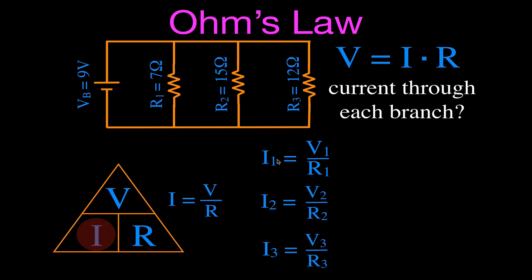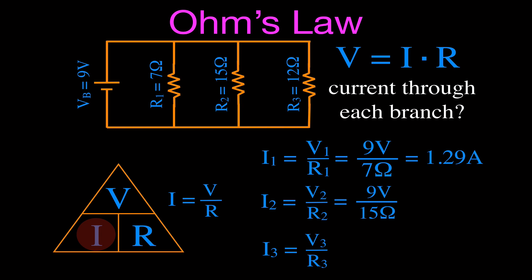To find the current through each branch, we use I equals V divided by R, with the voltage and resistance for each resistor. They all have the same voltage of 9 volts but different resistances. I1 equals 9 divided by 7, which gives us 1.29 amperes. For I2, it's 9 volts divided by 15 ohms, giving 0.6 amperes. For I3, 9 volts divided by 12 ohms gives 0.75 amperes. These values make sense: the lowest resistance (7 ohms) has the highest current, because current and resistance are inversely proportional. The highest resistance (15 ohms, resistor 2) has the lowest current.